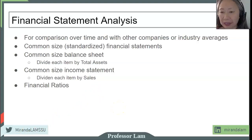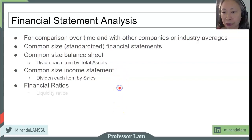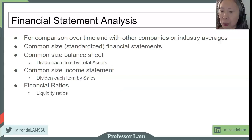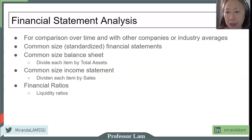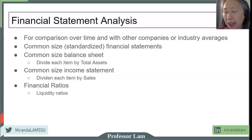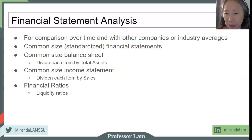We can classify these ratios into different groups. The first group is liquidity ratios — ratios that measure the very short-term financial health of the firm. Liquidity in finance refers to the ability of the company to meet its very short-term obligations. Liquidity ratio means: does the firm have enough cash on hand, or enough assets that it can quickly convert into cash, so that it can pay its bills?